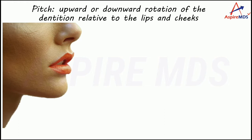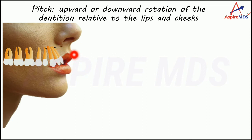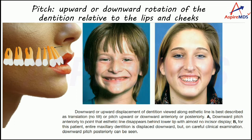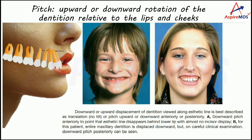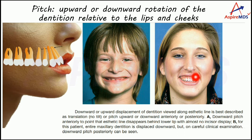For example, consider the teeth and the lip covering them. In the first example, when the patient is smiling, you are not able to see the maxillary teeth at all. The reason is that there is a pitch of the anterior teeth rotated downwards, so the upper teeth are covered fully by the lower lip and are almost not visible.